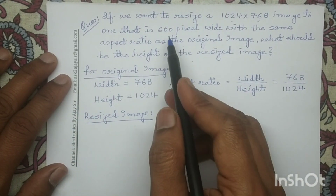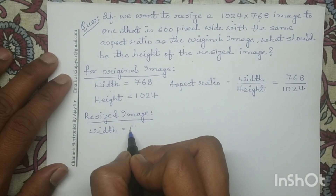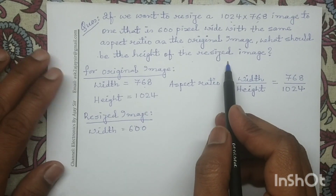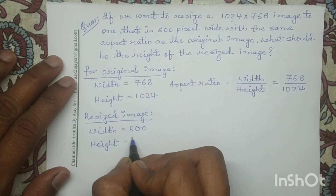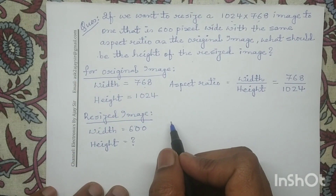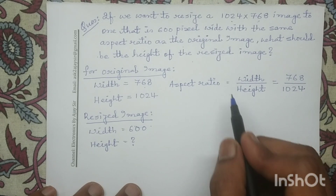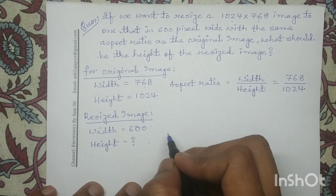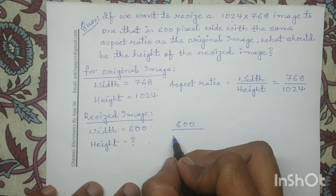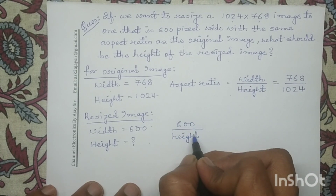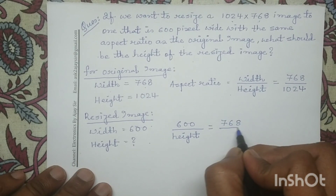In the resized image, the width is given as 600 pixels and the height we have to determine. The aspect ratio of the resized image is identical to that of the original image. So the aspect ratio of the resized image, that is width upon height, gives us 600 divided by height equals 768 divided by 1024.